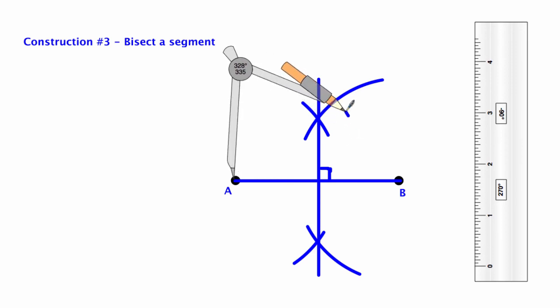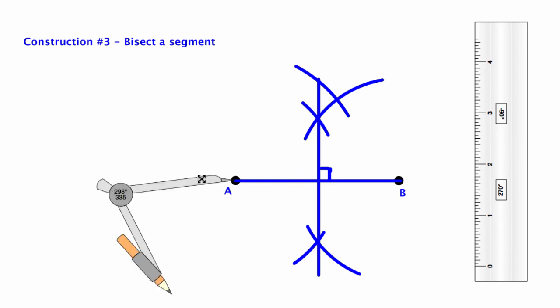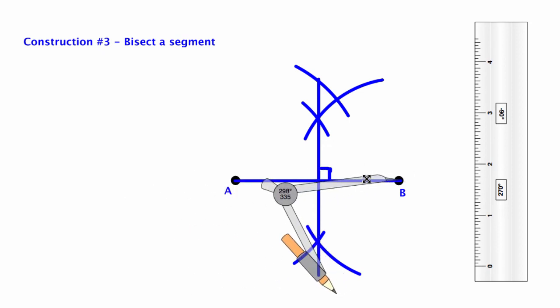If you want to, you can open up your compass a little bit more and then swing it across from point A and B, and you should find anywhere where you swing these should be right on that line.